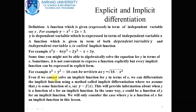Even if we cannot solve an implicit function for y in terms of x, we can differentiate it using a method called implicit differentiation, where we assume that y is some function of x, say y = f(x). This provides information about when y is a function of x. In this lesson, we will only consider the case where y is a function of x.